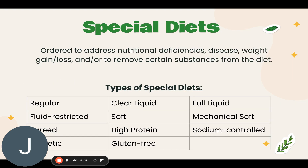In the hospital or facility, you may see patients ordered different special types of diets. They are ordered to address nutritional deficiencies, disease, weight gain or loss, and to remove certain substances from the diet. A regular or general diet, also called a house diet, means there are no dietary limits or restrictions. A clear liquid diet allows foods that are liquid at room temperature and clear enough to see through — such as jello, apple juice, water, and coffee or tea without cream. A clear liquid diet doesn't provide enough nutrients to maintain health for a long period of time.